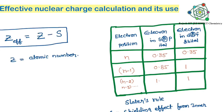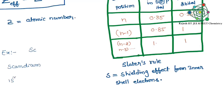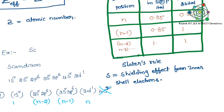Now coming to one example — I am taking scandium. Scandium has atomic number 21. First, what should we do? We need to write the electronic configuration of scandium. After writing the electronic configuration, we need to make them into groups by increasing n value: 1s is one group, 2s 2p is one group, 3s 3p is one group, 3d is one group, and 4s is another group. Here we are going to observe the 3d electron's effective nuclear charge, so we can cut the 4s2.